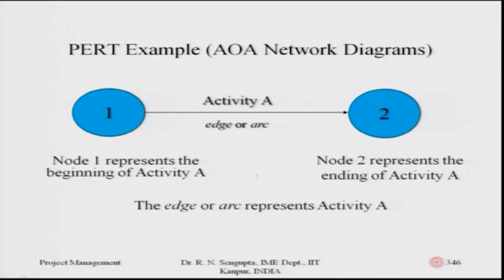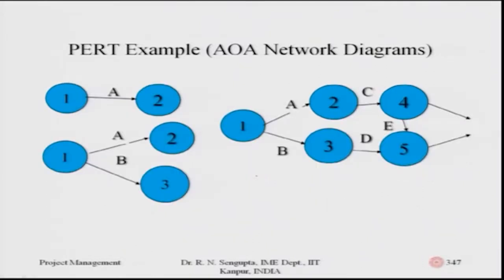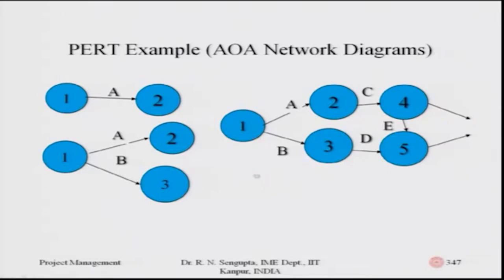Node one represents activity A in the AOA format. Activities are shown in arcs rather than nodes — this is activity on arc versus activity on node. When following one convention, use it consistently throughout the diagram. For example, in AOA, one leads to two representing activity A; one to two or one to three represents A and B; further nodes represent activities C, D, and so on.